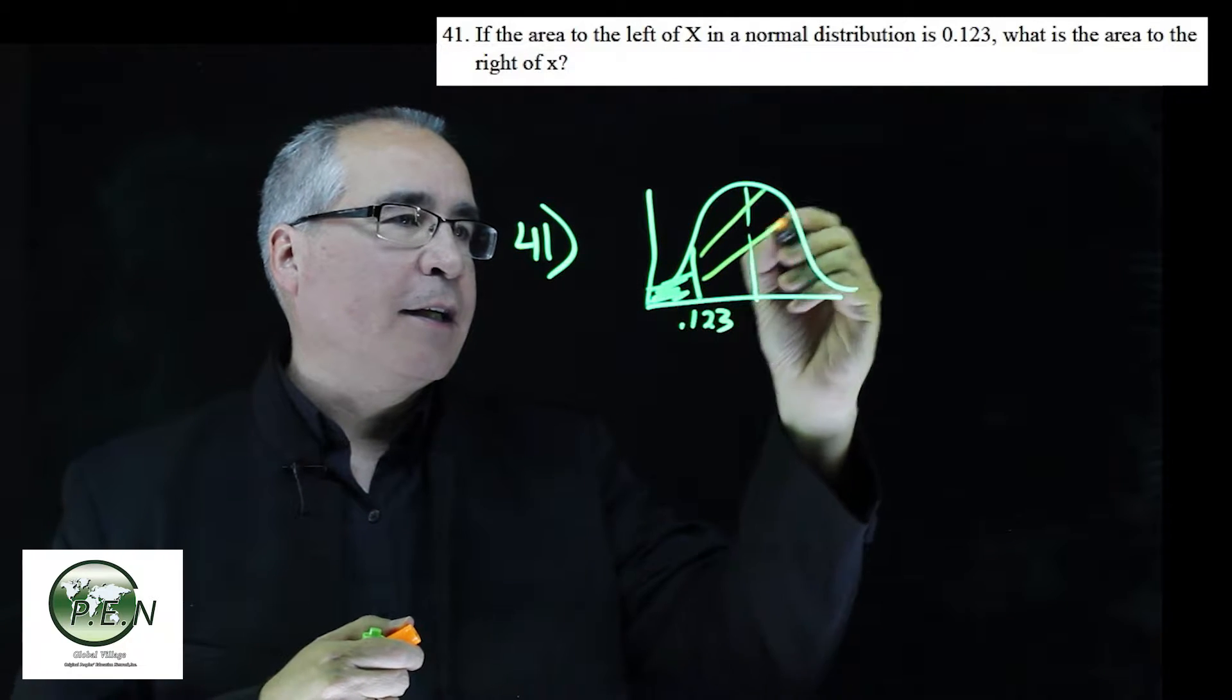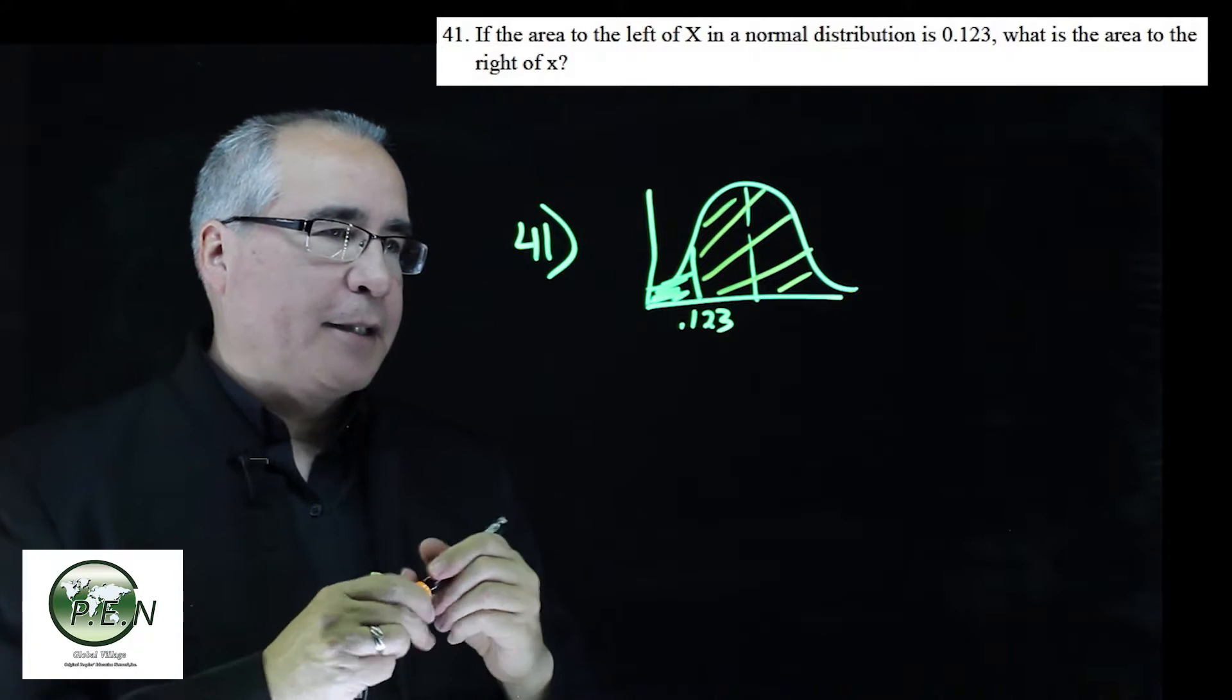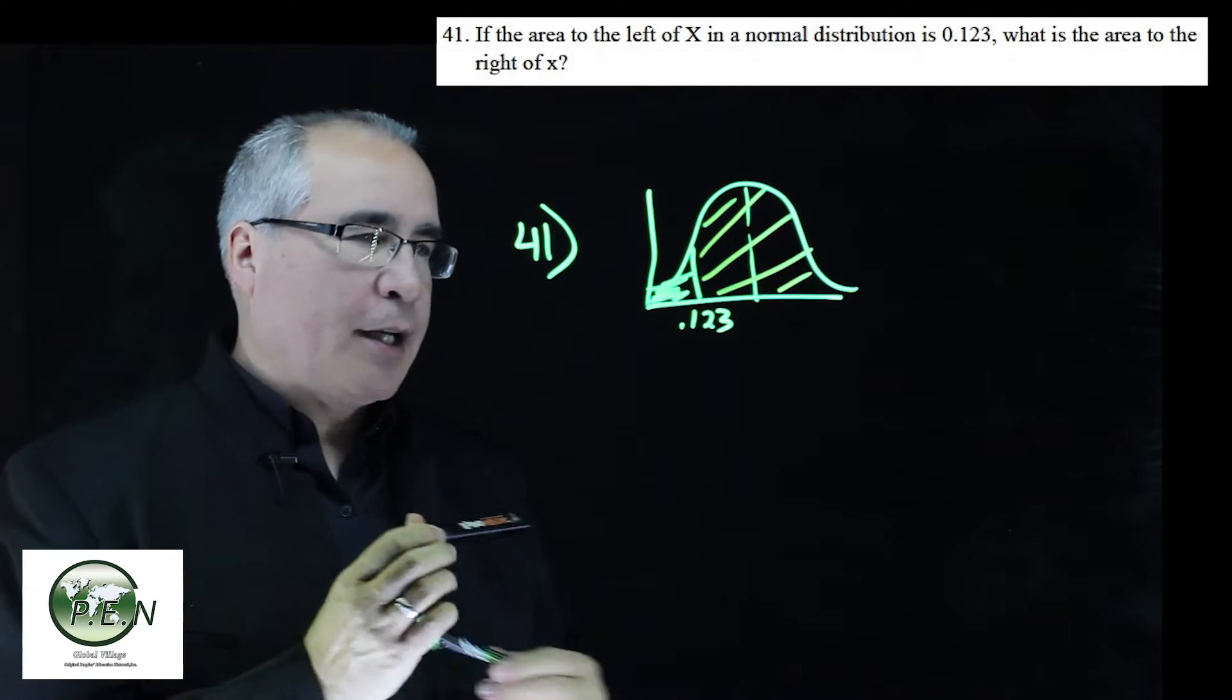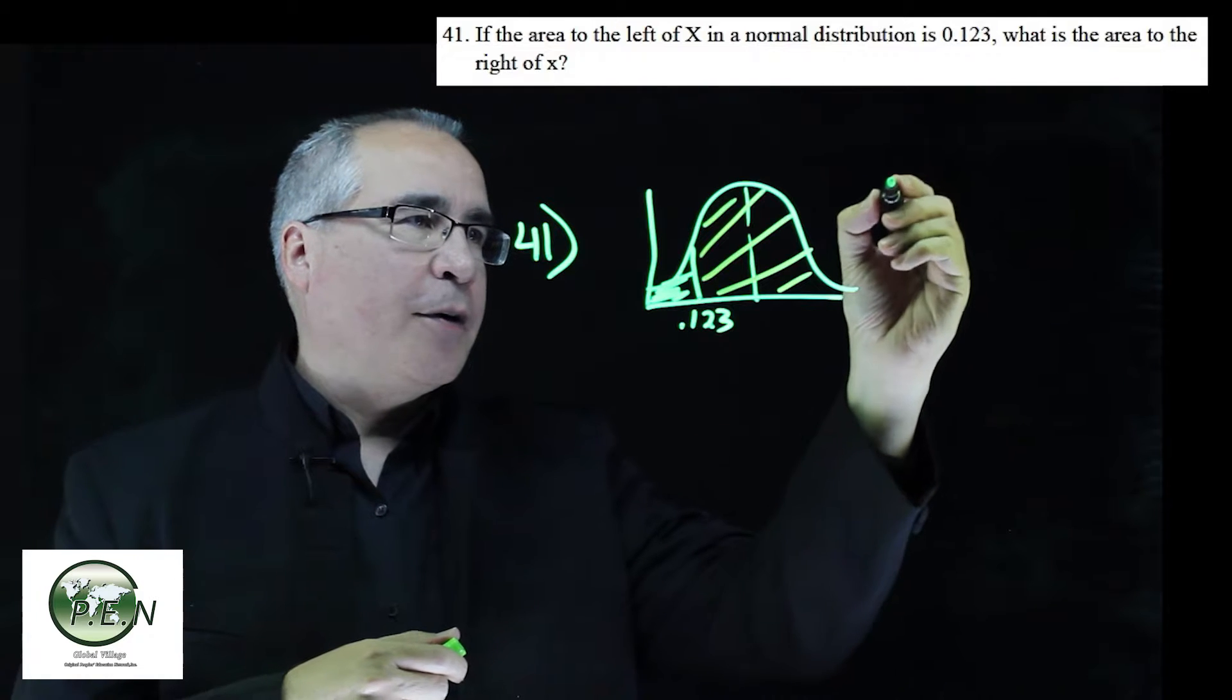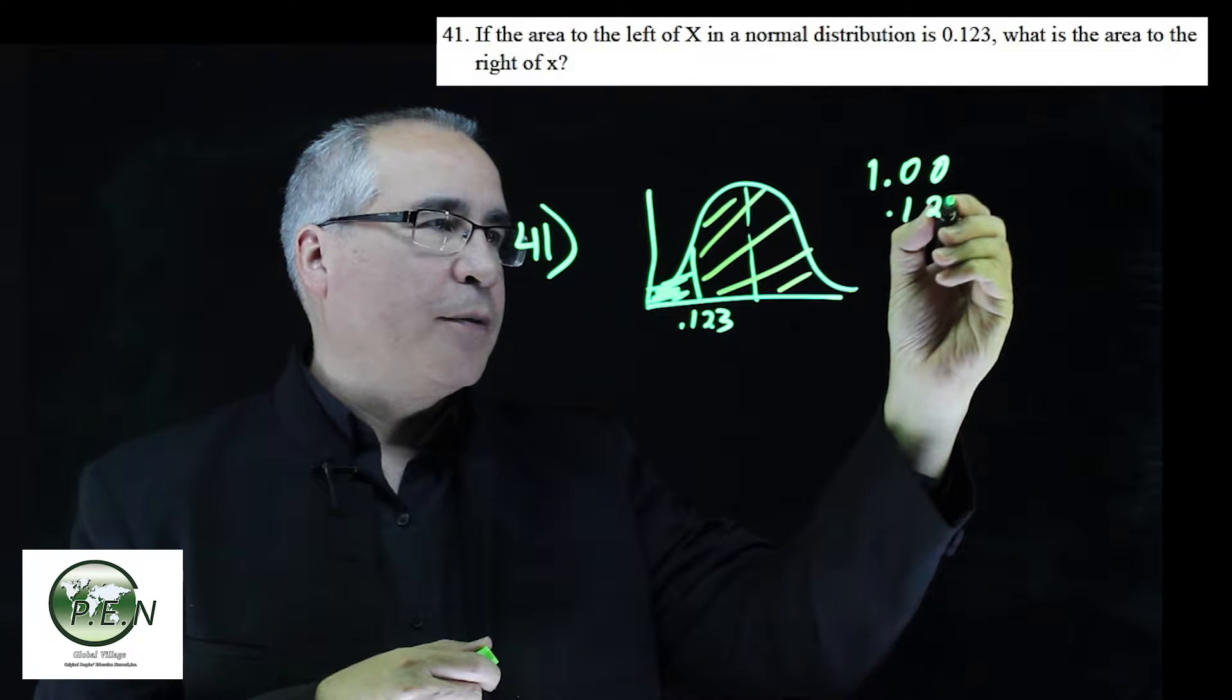So we want to know this area. And so we use the complement. We know the whole thing is 100%, or 1.00. We subtract the 0.123.